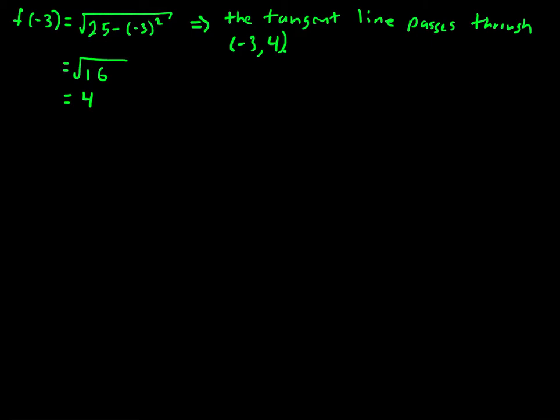And if we recall, f prime of x, as found in part a, was equal to negative x divided by the square root of 25 minus x squared.